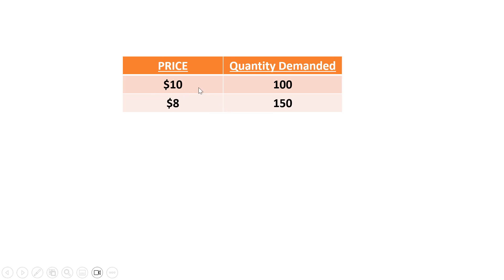So here's our demand schedule. Price $10, quantity demanded 100. Price is $8, quantity demanded 150.